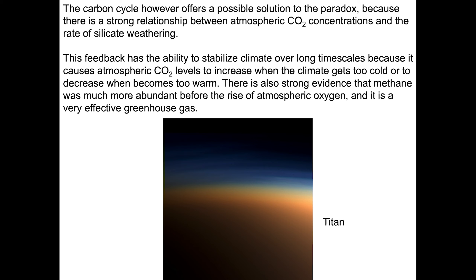There's also strong evidence that methane was really abundant before the rise of atmospheric oxygen, and we know from earlier in the course that it's a very effective greenhouse gas. As an example, we have the moon of Saturn, Titan — you can see it with a good pair of binoculars on most nights. The coloration of Titan is representative of the chemistry of its atmosphere, which we'll return to in a minute.